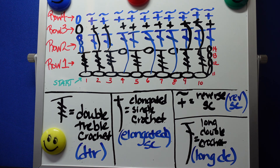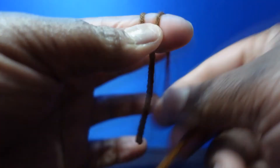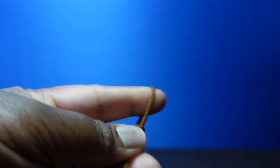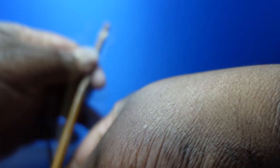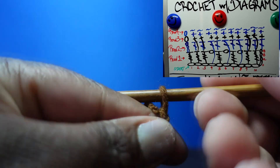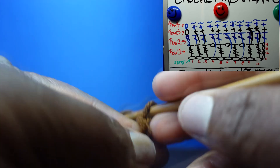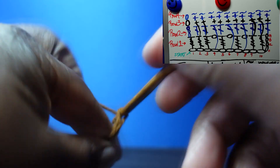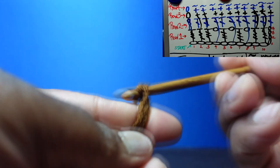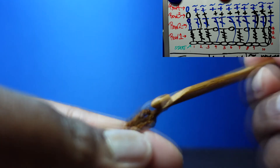Alright, let's crochet this out. We're going to start with a slip knot, insert our crochet hook, and close the loop. As the diagram shows, we need to chain 14: one, two, three, four, five, six, seven, eight, nine, ten, eleven, twelve, thirteen, and fourteen.